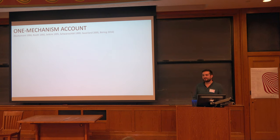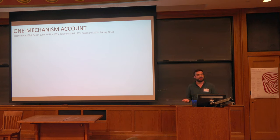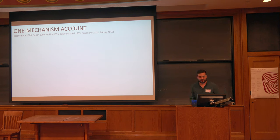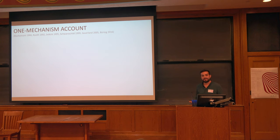I'm going to massively oversimplify the background literature on anaphoric de-accenting and the theoretical accounts into two different classes, and then suggest that maybe neither of them work very well. These two classes are trying to explain the mechanism that licenses anaphoric de-accenting, and in particular I'm going to focus on anaphoric de-accenting under non-identity — cases like viola/string instrument or call Republican/insult.